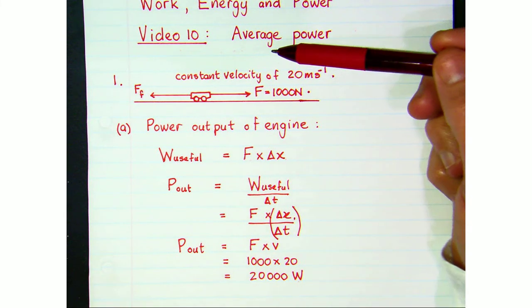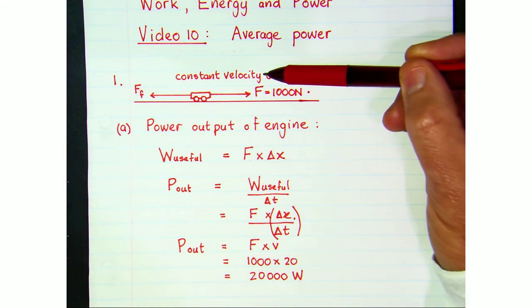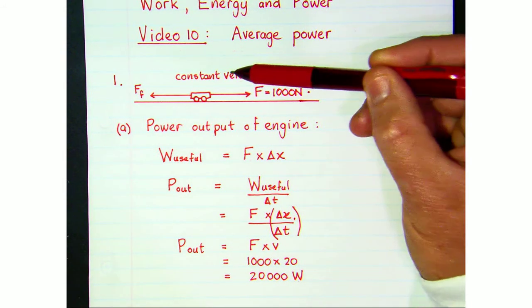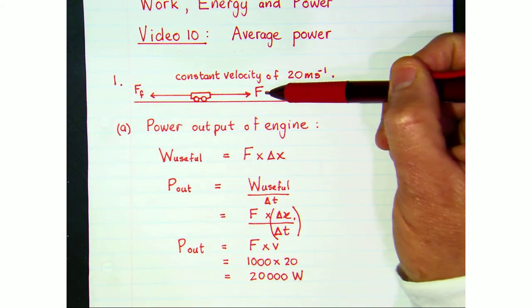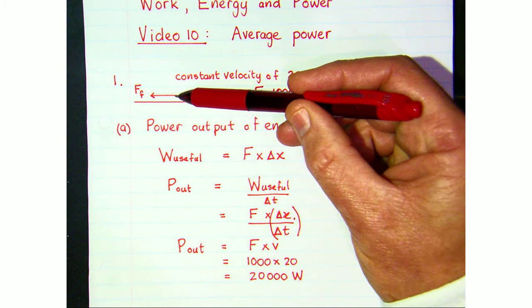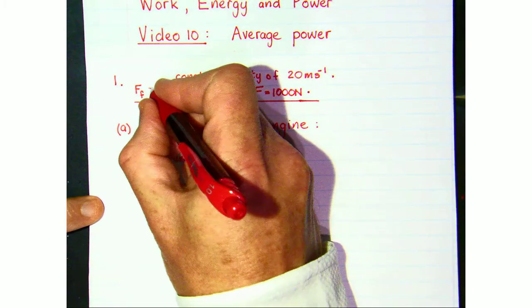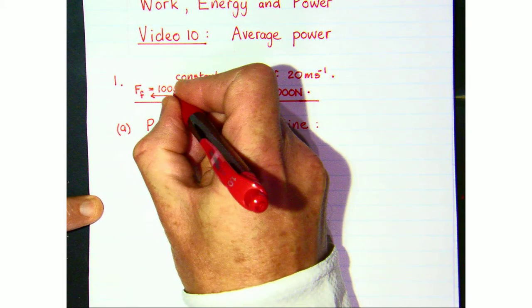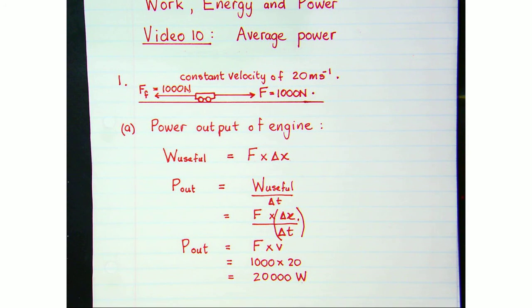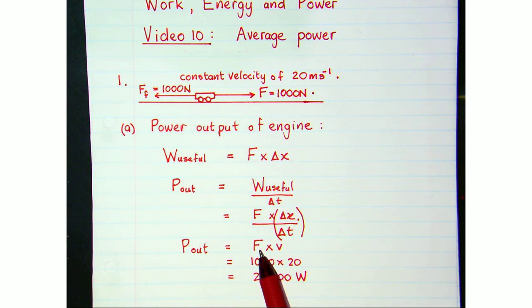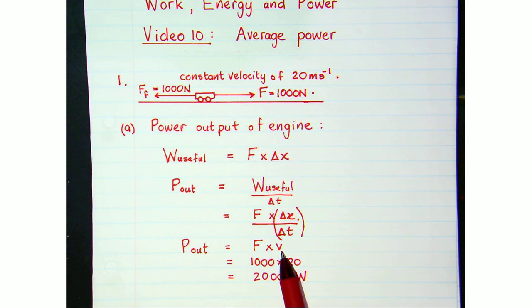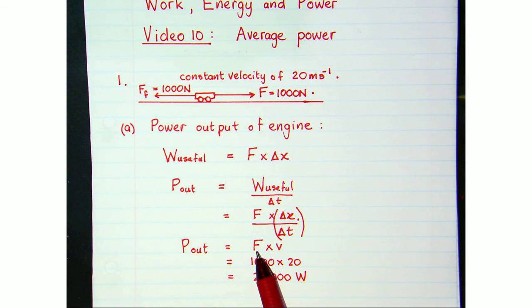This vehicle's engine is doing 20,000 joules every second — that's the power output. When a car moves at constant velocity, the forces are balanced: the forward force of the engine is exactly equal in magnitude to the frictional force, so the frictional force would also be 1,000 newtons. If a car were speeding up, we'd work out the average velocity and multiply that by the forward force of the engine.